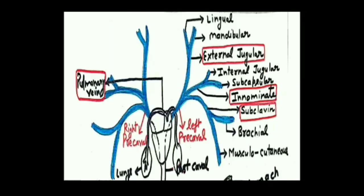The two precavals — right and left — receive blood from upper body parts. Each precaval consists of three branches: an external jugular vein, an innominate vein, and a subclavian vein. The external jugular receives blood from the head region and is made up of two branches: lingual vein, which collects blood from the tongue region and hypoglossal muscle, and mandibular vein, which collects blood from the lower jaw.